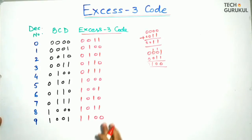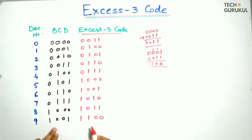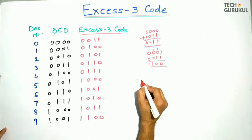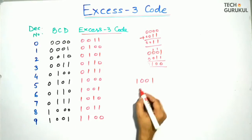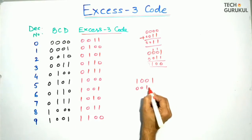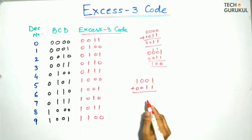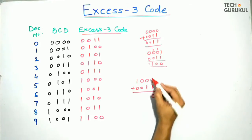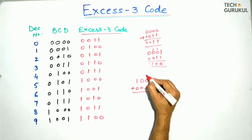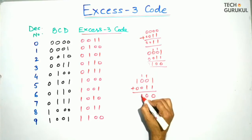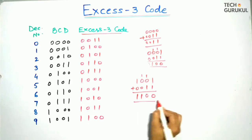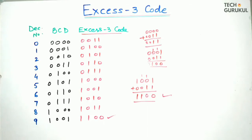This is the table for XS3 code. We can check it for 9. For decimal 9, whose BCD is 1001, we add 0011. The result, handling carries, gives the XS3 code for 9 as 1100.